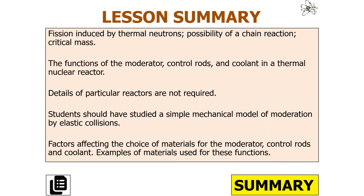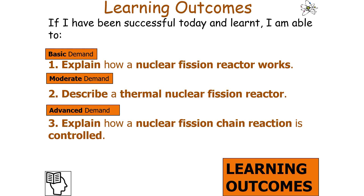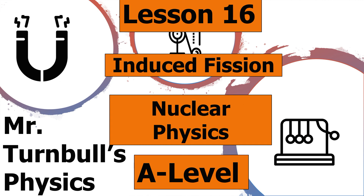To summarize today's lesson: fission induced by thermal neutrons, the possibility of a chain reaction and critical mass, the functions of the moderator, control rod, and coolant in a thermal nuclear reactor, and a simple mechanical model of moderation by elastic collisions. We should also know the factors affecting the choice of materials for the moderator, control rod, and coolant, with examples. If we've been successful, we can explain how a nuclear fission reactor works, describe a thermal nuclear fission reactor, and explain how a nuclear fission chain reaction is controlled. Thank you very much for watching.